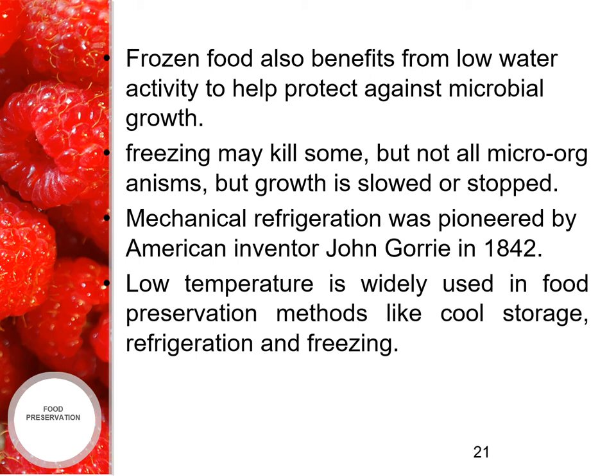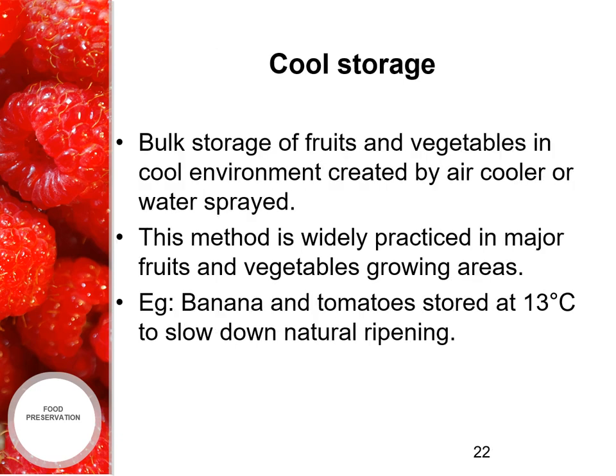Freezing may kill some but not all microorganisms; when growth is slowed or stopped. Mechanical refrigeration was pioneered by American inventor John Gorrie in 1842. Low temperature is widely used in food preservation methods like cool storage, refrigeration and freezing. The first method is cool storage: bulk storage of fruits and vegetables in a cool environment created by air cooler or water sprayed. Example — bananas and tomatoes stored at 13 degrees Celsius to slow down the ripening process.